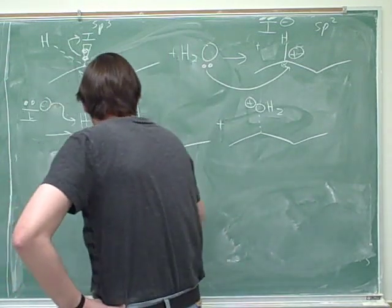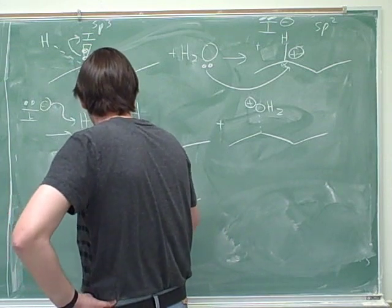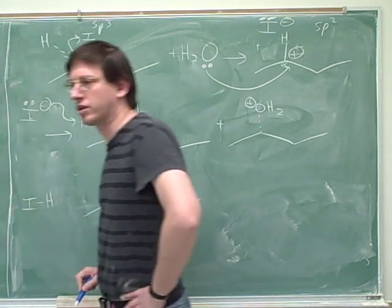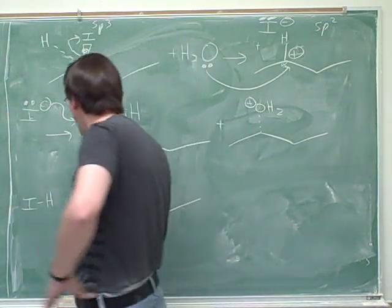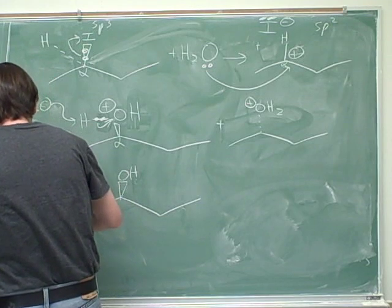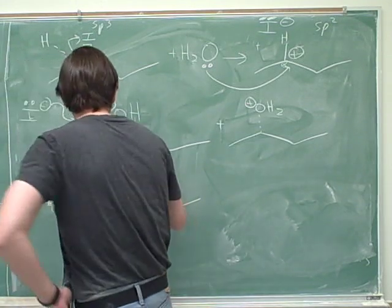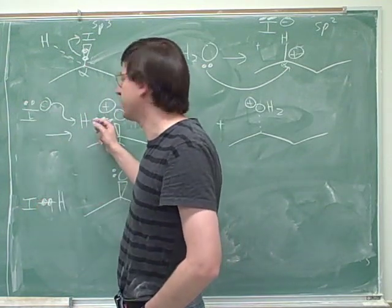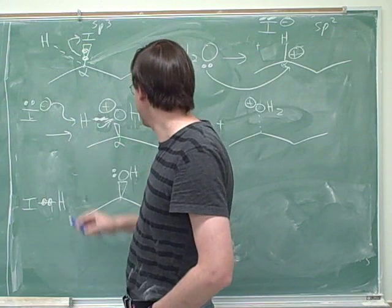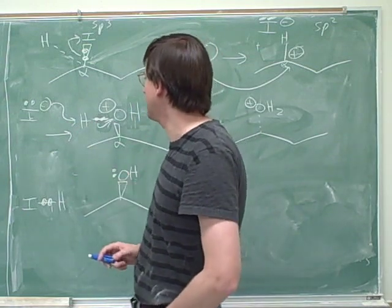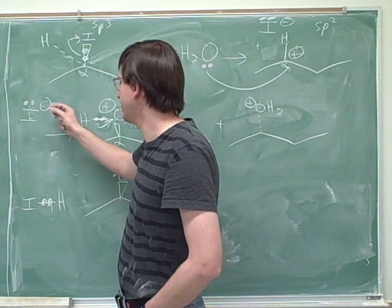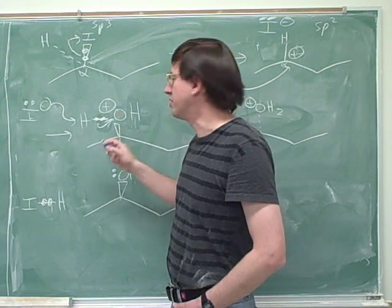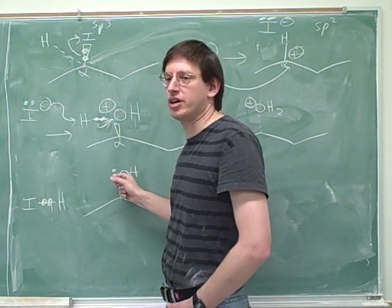So then our product looks like this, and we'd have two of those — one dashed and one wedged — and those would be all our products. This pair of electrons went into this bond, and the pair of electrons that used to be in the hydrogen-oxygen bond has gone into a lone pair here. We have to change two charges: the iodide started negative and is losing electrons, so it becomes neutral; and the oxygen at the final head started positive and gains electrons, so it becomes neutral.